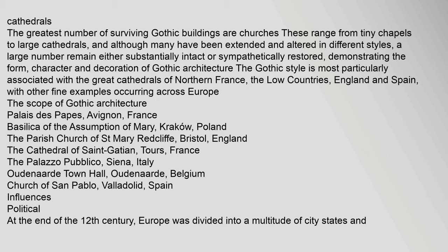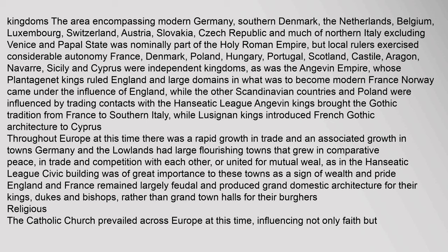At the end of the 12th century, Europe was divided into a multitude of city states and kingdoms. The area encompassing modern Germany, southern Denmark, the Netherlands, Belgium, Luxembourg, Switzerland, Austria, Slovakia, Czech Republic and much of northern Italy was nominally part of the Holy Roman Empire, but local rulers exercised considerable autonomy. France, Denmark, Poland, Hungary, Portugal, Scotland, Castile, Aragon, Navarre, Sicily and Cyprus were independent kingdoms, as was the Angevin Empire, whose Plantagenet kings ruled England and large domains in what was to become modern France.